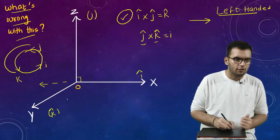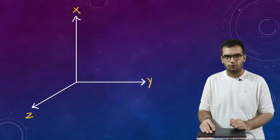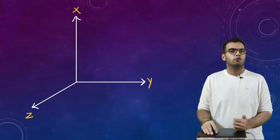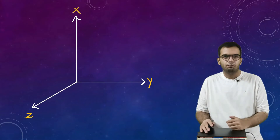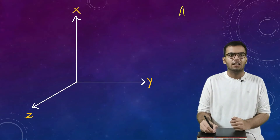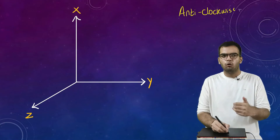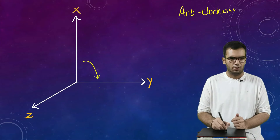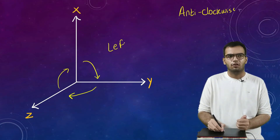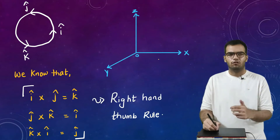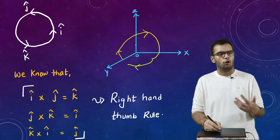So there are coordinate systems which are left-handed, obeying the left-hand thumb rule, and others that obey the right-hand thumb rule. Fortunately, you don't always need to check through the hands and apply the rules. It's simple: right-handed systems follow the anti-clockwise method. If you go from x to y, and that direction is clockwise, then the system is a left-handed system.